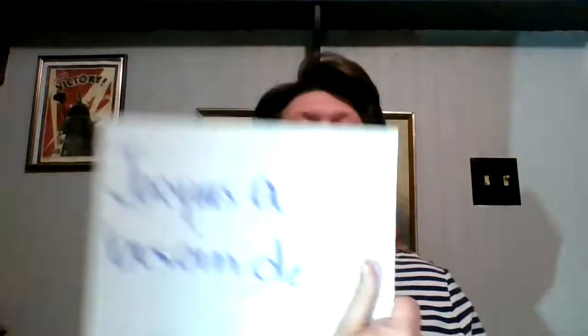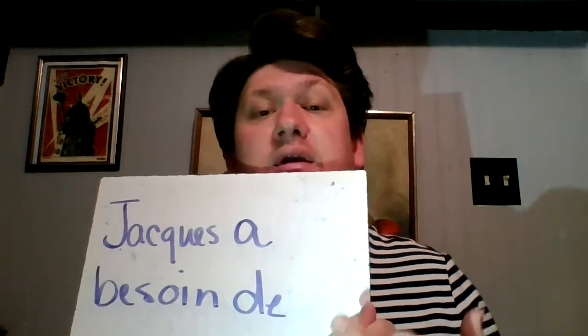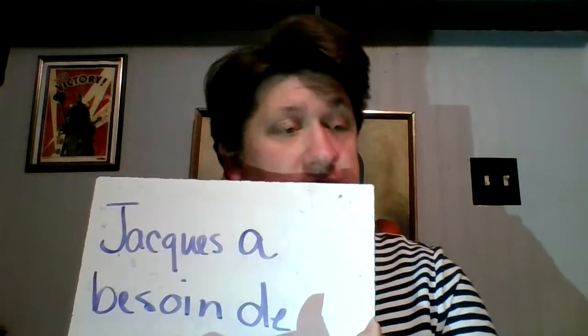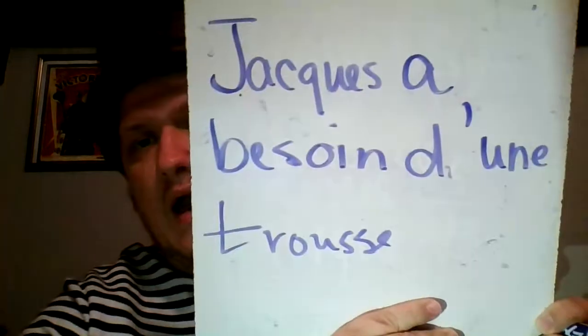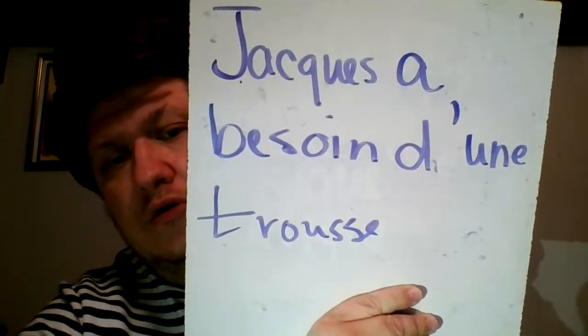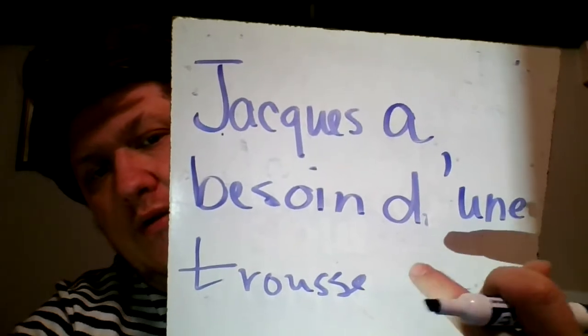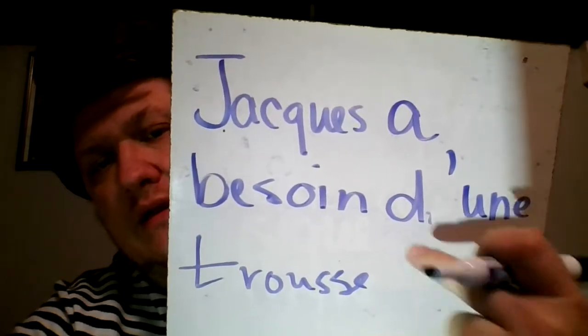The other important thing is the 'de'. When you have that de, if what comes after it starts with a vowel, then you have to do an apostrophe. So let's say it's 'une truce' — you would say Jacques a besoin d'une truce. Do you see how I have contracted it now? So you have d'apostrophe — d-u-n-e.